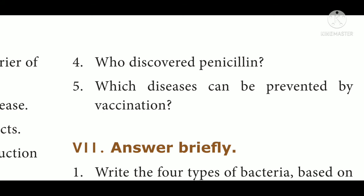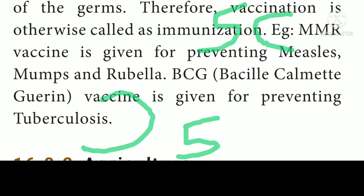Question 5: Which diseases can be prevented by vaccination? Answer: MMR vaccine for measles, mumps, rubella. BCG — Bacillus Calmette-Guérin — vaccine for tuberculosis.